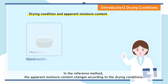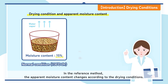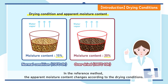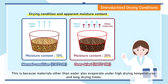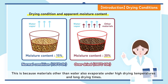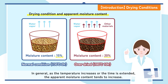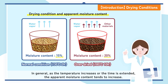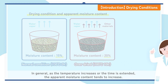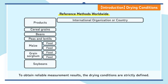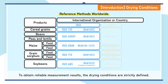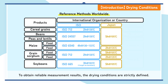In the reference method, the apparent moisture content changes according to the drying conditions. This is because materials other than water also evaporate under high drying temperatures and long drying times. In general, as the temperature increases or the time is extended, the apparent moisture content tends to increase. To obtain reliable measurement results, the drying conditions are strictly defined.